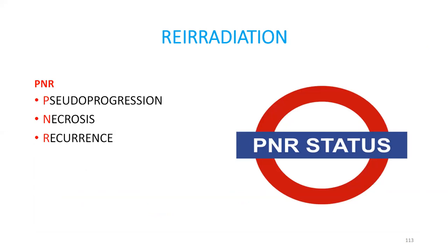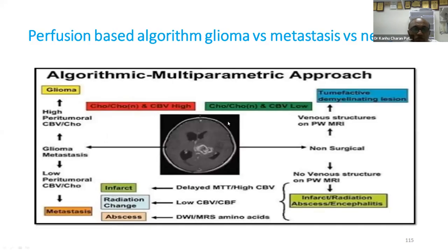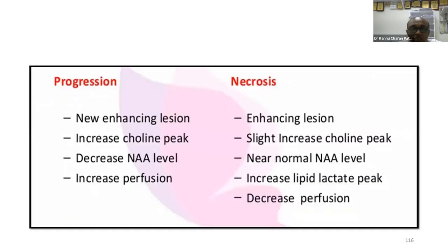For re-radiation, you must determine whether the post-RT lesion represents pseudoprogression, necrosis, or recurrence — requiring MRS, perfusion scan, and PSMA scan. In progression: new enhancing lesion, increased choline peak, decreased NAA level, and increased perfusion. In necrosis: enhanced lesion, slightly increased choline peak, near-normal NAA value, increased lipid-lactate, and decreased perfusion. These four criteria differentiate progression from necrosis.